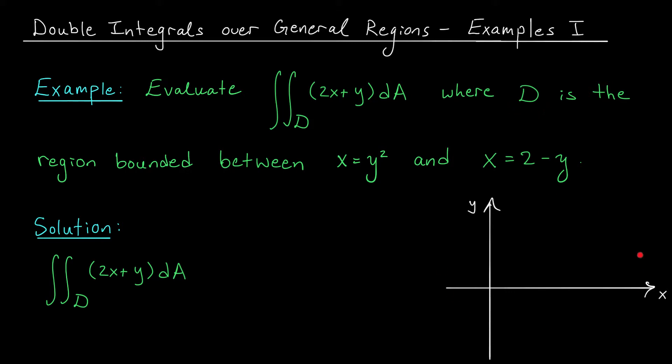If we graph the region D in the xy plane, we should be able to decide if it's type 1 or type 2 or both and set up our integral accordingly. So here D is the region bounded between the curves x equals y squared and x equals 2 minus y.